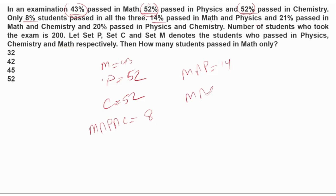Math and chemistry: 21 percent. Physics and chemistry: 20 percent. We are taking 21 percent. The question is: how many students passed math only?